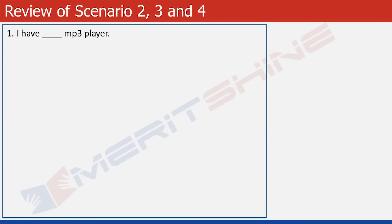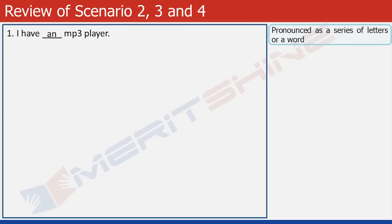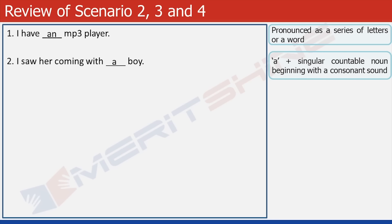Now let's do a quick review of scenarios 2, 3, and 4. Try this: I have dash mp3 player. What will come here — A or AN, and why? We will have AN here because mp3 is pronounced as a series of letters. Now try: I saw her coming with dash boy. It will take article A because it is a singular countable noun beginning with a consonant sound.